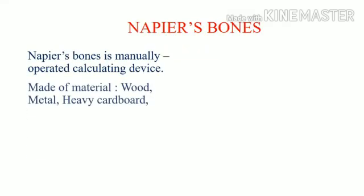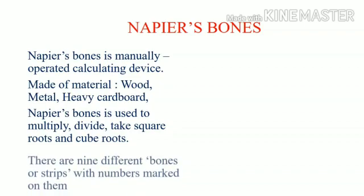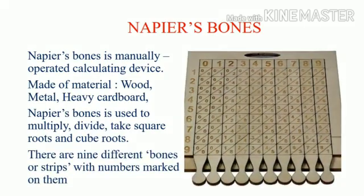Napier's Bones is a manually operated calculating device, made of material such as wood, metal, or heavy cardboard. Napier's Bones is used to multiply, divide, take square roots, and cube roots. There are nine different bones or strips with numbers marked on them.